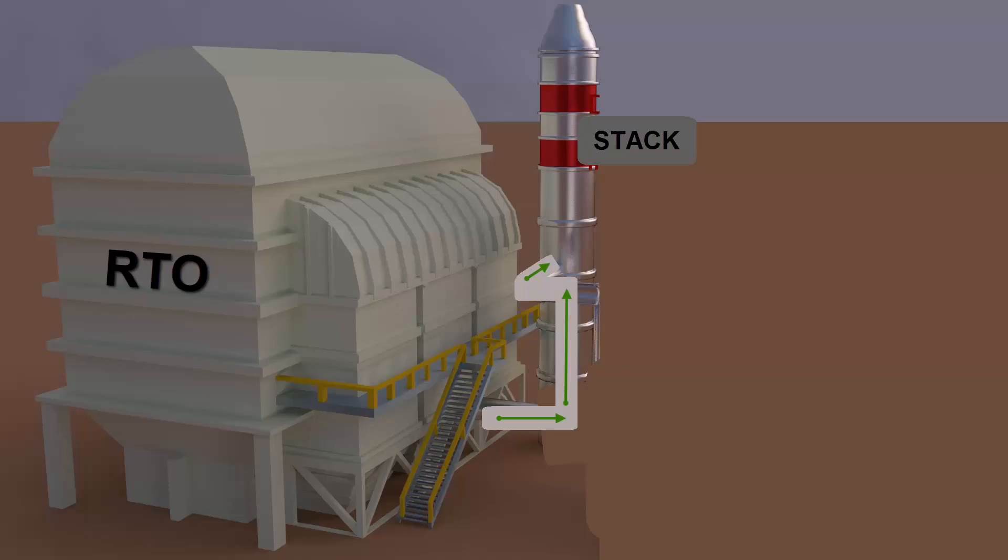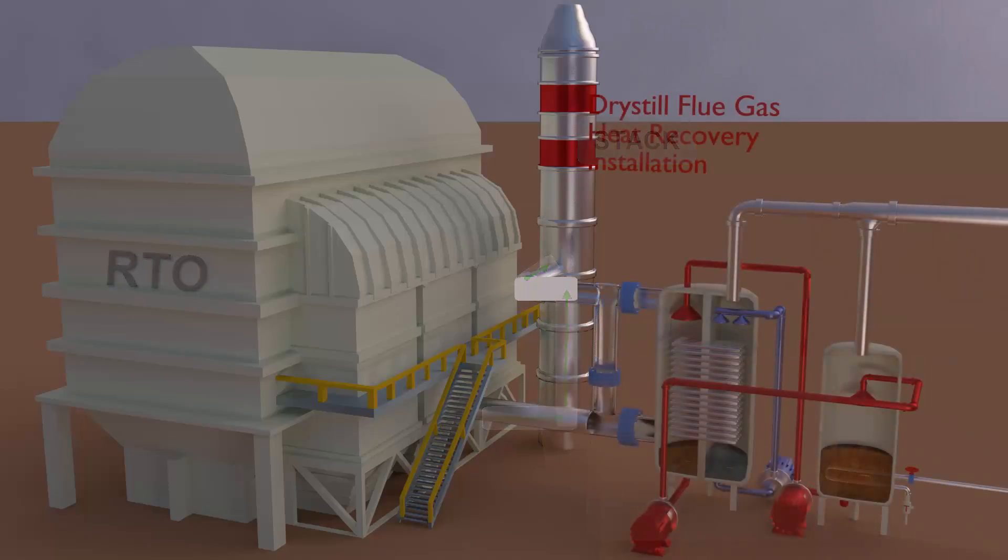This flue gas may be as much as one-third water vapor by weight. Drystill interposes its HRU between the RTO and the stack.